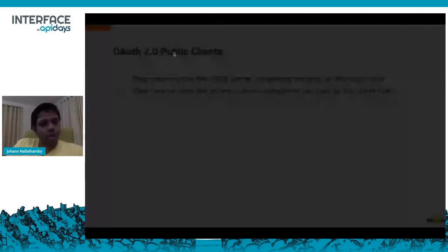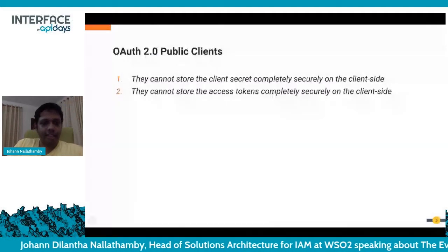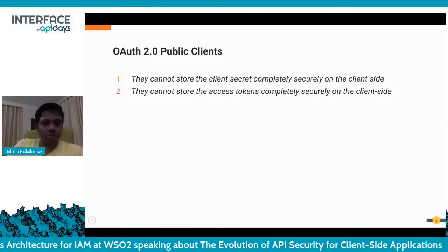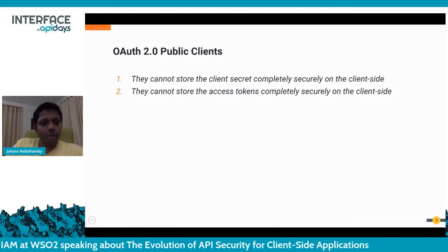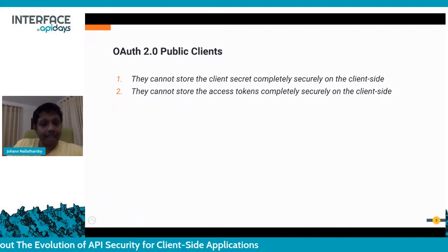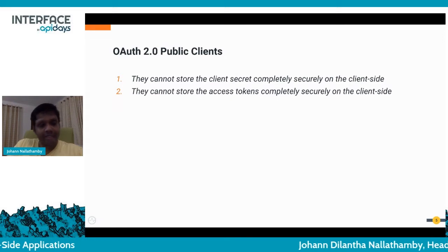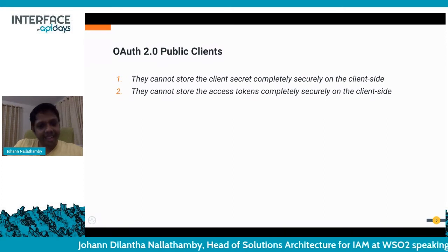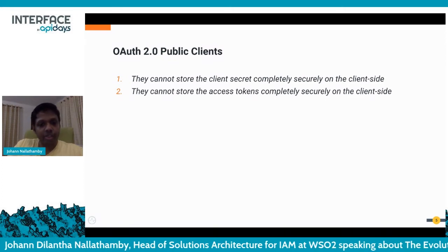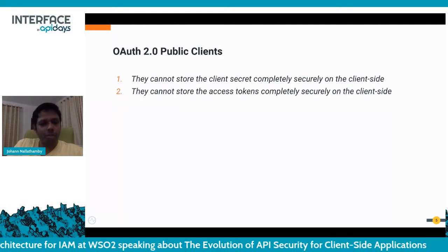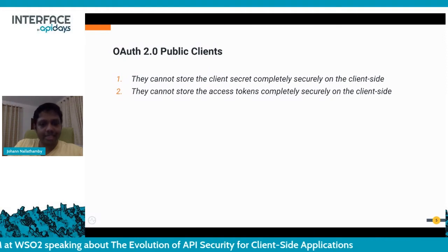Client-side applications are referred to as OAuth2 public clients in the OAuth2 specification. There are two main key concerns when it comes to OAuth2 public clients. One is that OAuth2 public clients cannot store their client secrets securely on the client-side storage, and they cannot store access tokens and refresh tokens securely in the client-side storage. In browser applications, the client secret and access tokens have to be stored in the browser storage, whereas in mobile native applications they are stored in device memory. Both of these storages cannot be considered entirely secure as they are outside the control perimeter of the application.